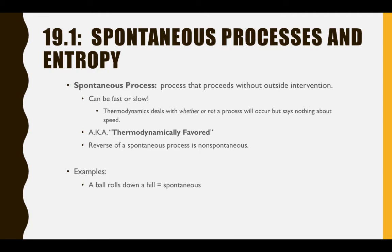A ball rolling down a hill is a spontaneous process — the ball does not require any outside intervention to roll down the hill. Note that it might require an initial push to get it over the peak of the hill; this is akin to the activation energy in a reaction. However, once the ball starts rolling down the hill, no intervention is required. The opposite process, a ball rolling up a hill, is non-spontaneous and will not happen without outside intervention.